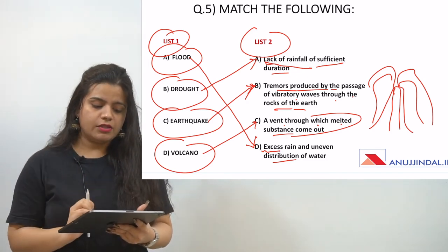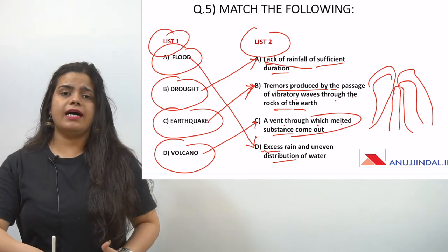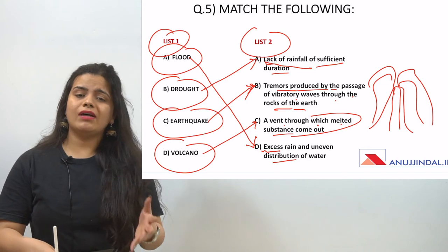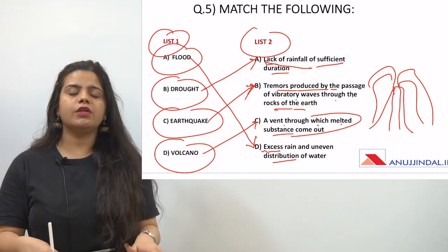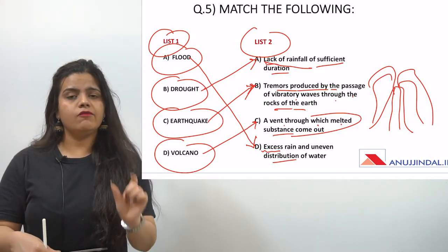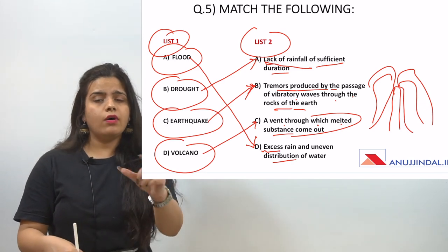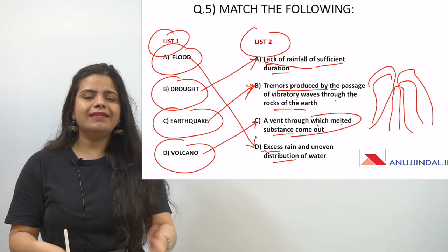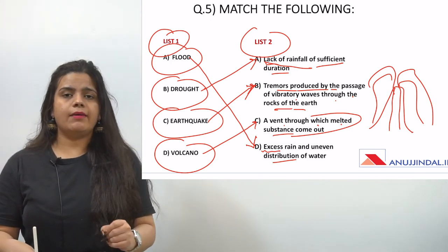You have to remember the natural hazards — flood, drought, volcano, and earthquake — because a lot of questions come from them in the exam. For volcanoes and earthquakes specifically, you must also remember the related terminology: what is the pipe, the cone, the focus, and the epicenter. These are important details you need to remember carefully for your UGC NTA NET exam.